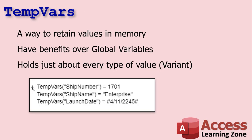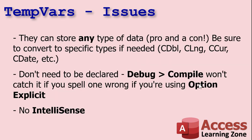Another thing: TempVars don't need to be declared. They're not variables the compiler recognizes — you can just write TempVars!ShipName = "Enterprise" anywhere in your code. Because they're not compiled, they're very prone to typos. Anytime I use a TempVar I copy-paste the name, because spelling errors are the number one reason code doesn't work. That's one reason we use Option Explicit — it catches variables that are spelled wrong. But it won't check your TempVars. And finally, there's no IntelliSense support for TempVars.